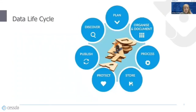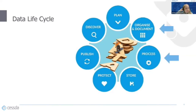The DMAG is organized along what we call a data life cycle — from the perspective of data management. There are seven points in the data life cycle, and correspondingly seven chapters in the DMAG. The individual chapters represent seven issues in the data life cycle: plan, organize and document, process, store, protect, publish, and discover. My presentation will focus on two of these chapters: the first is called Organize and Document, and the second is called Process.